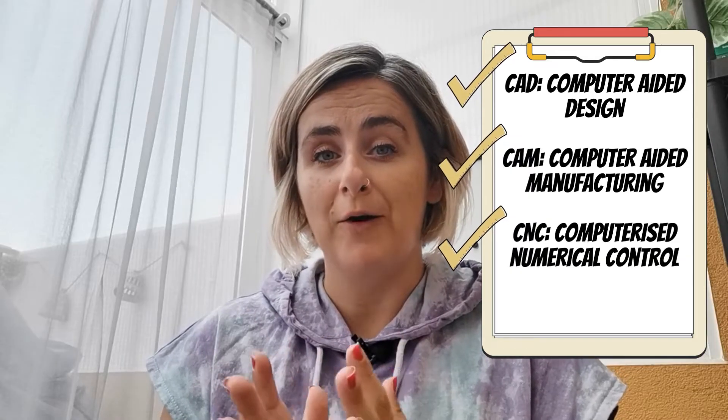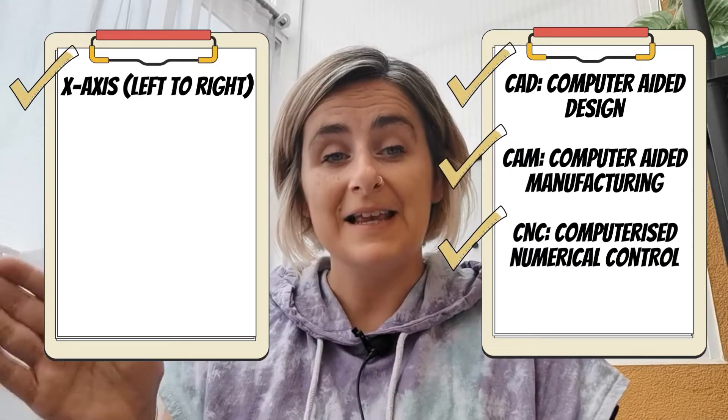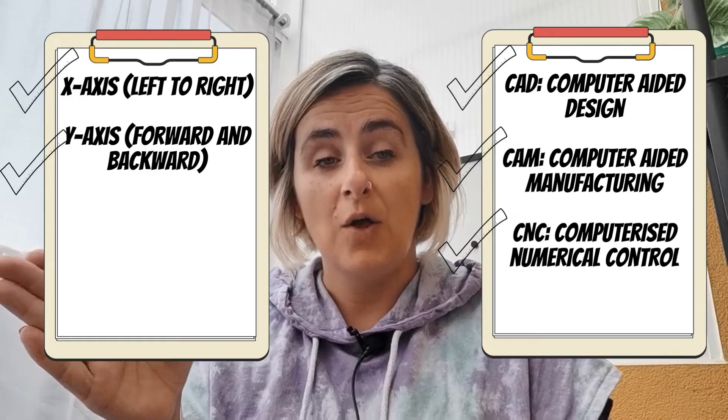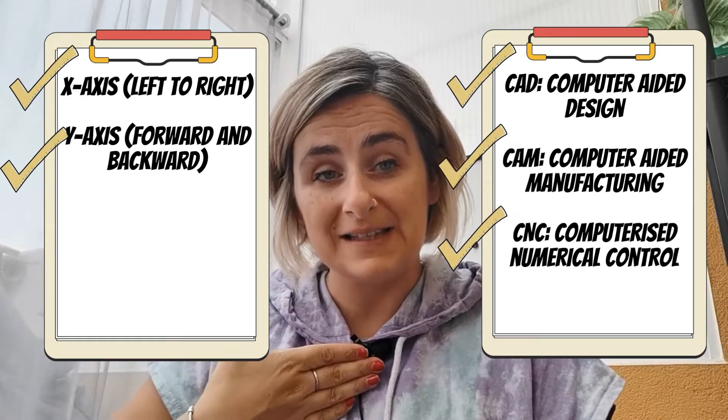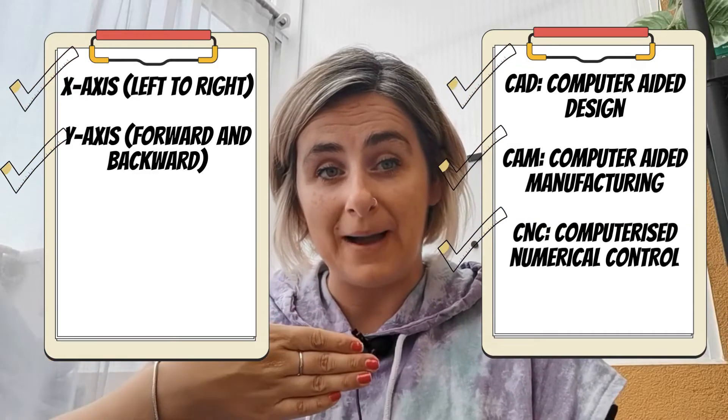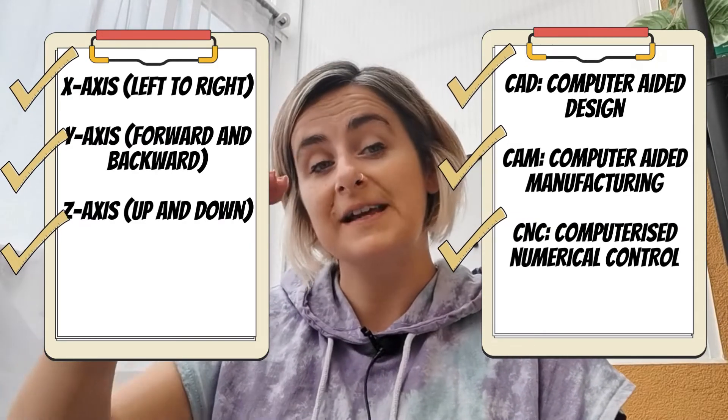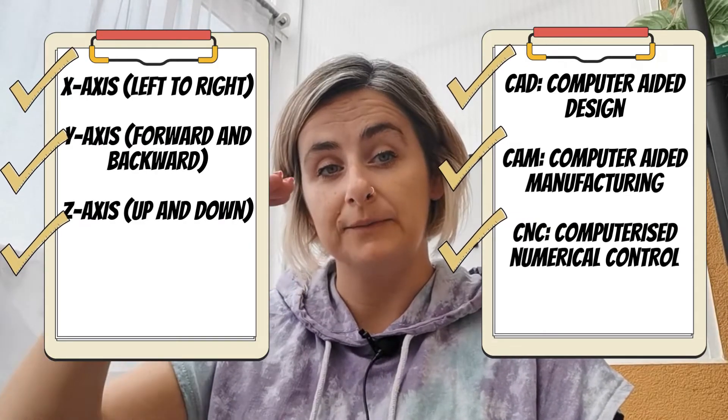Let's simplify everything we've learned so far. CAD is Computer Aided Design. CAM is Computer Aided Manufacturing. CNC is Computerized Numerical Control. The X axis is left to right. The Y axis is forward and backward. The Z axis is the distance of height — so that is up and down.